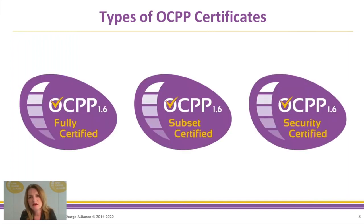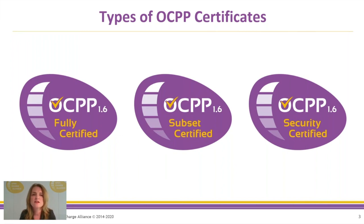At the moment, there are three types of OCPP certificates that you can get, and they only apply to OCPP 1.6. There is not yet a certificate available for OCPP 2.0, but I'll get to that later. The first is the OCPP fully certified certificate, which means you have implemented everything that the OCPP 1.6 specification describes that is mandatory. Optional parts can be included but do not have to be. All the mandatory parts of 1.6 are covered if you are fully certified.